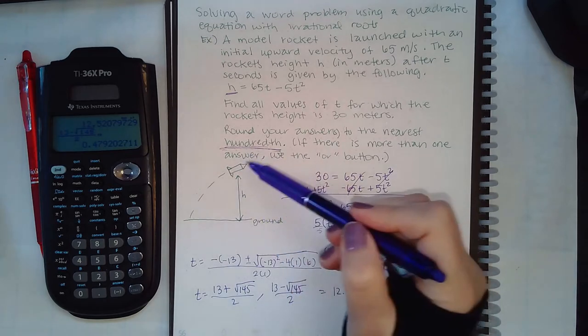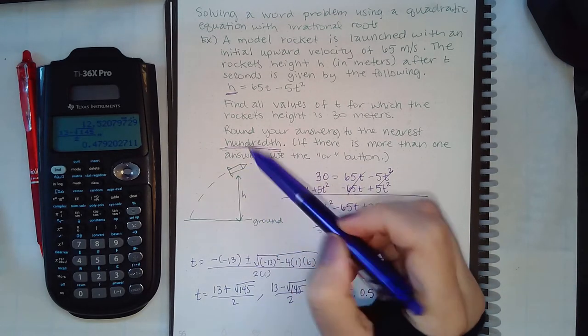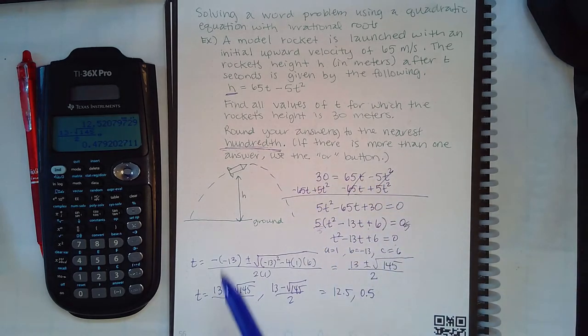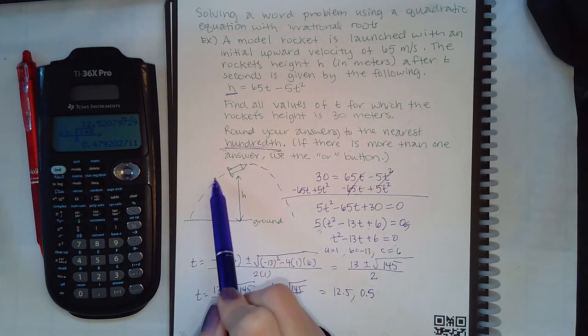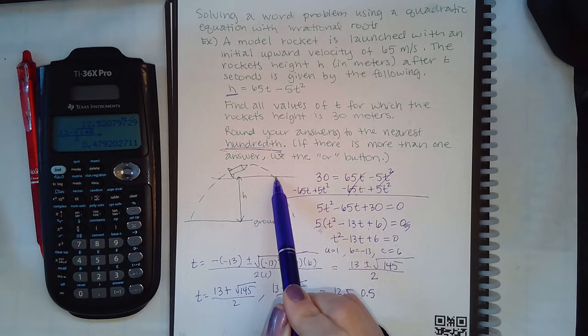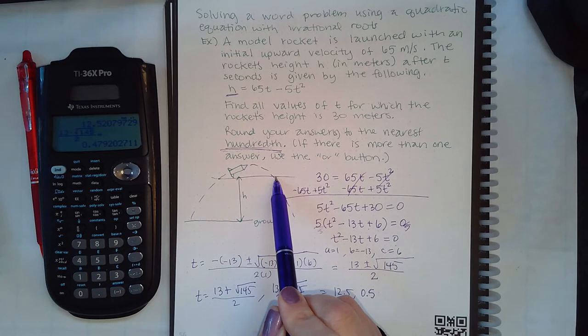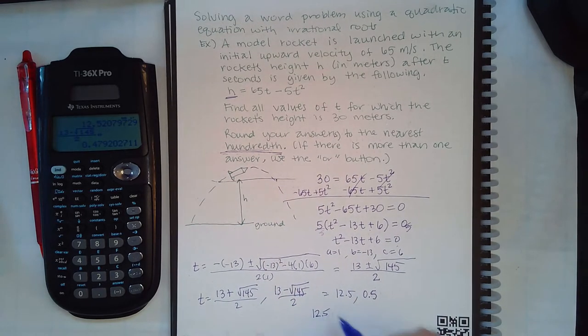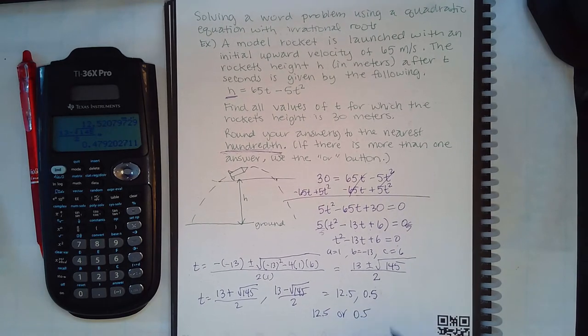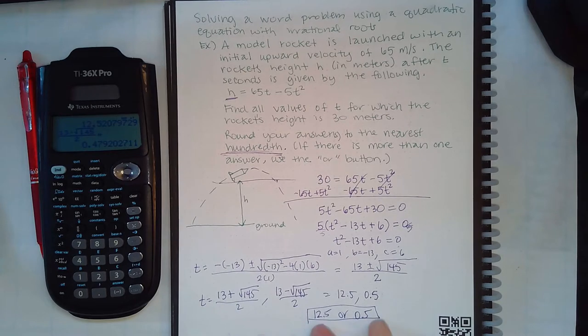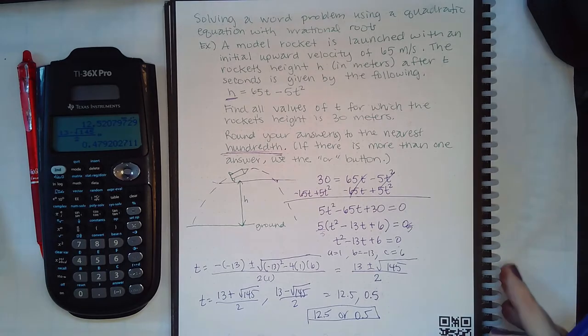Which makes sense because if this rocket continues in this manner, at some point it's going to reach its maximum and then it's going to come back down. So let's say that the height was here. It would hit the height of 30 meters here, but then it would also hit the height of 30 meters over there. And so these are the two times. So you would say 12.5 or 0.5. Now Alex will count it correct regardless of which order you type in your answers, as long as both answers are entered with the word or in between.